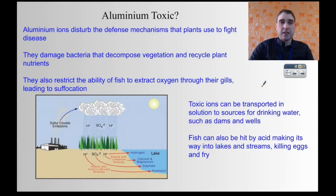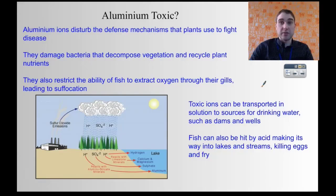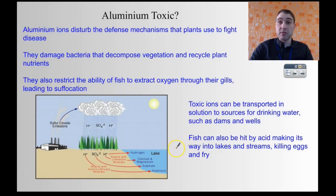Why is aluminium toxic? It disturbs the defense mechanism that plants use to fight disease. It can damage bacteria that decompose vegetation and reduce the ability of the bacteria to recycle nutrients. In fish, it can stop the ability of the gills to work, leading to suffocation. The ions can be washed into lakes and streams, making them toxic with high levels of aluminium. Acid washing into lakes and streams can be bad because it will kill off the fish as well.